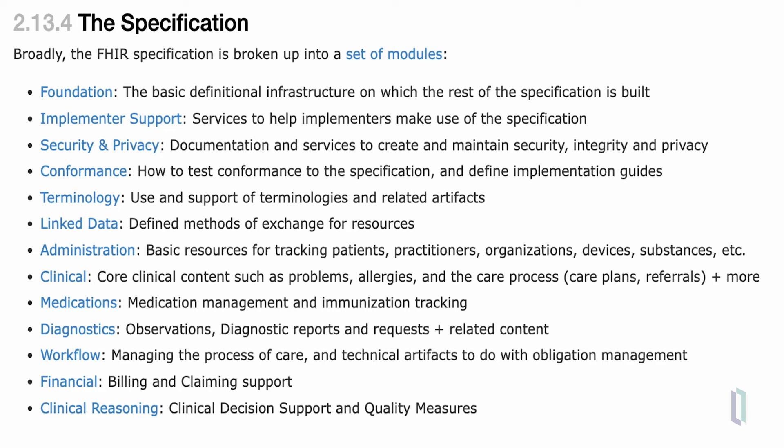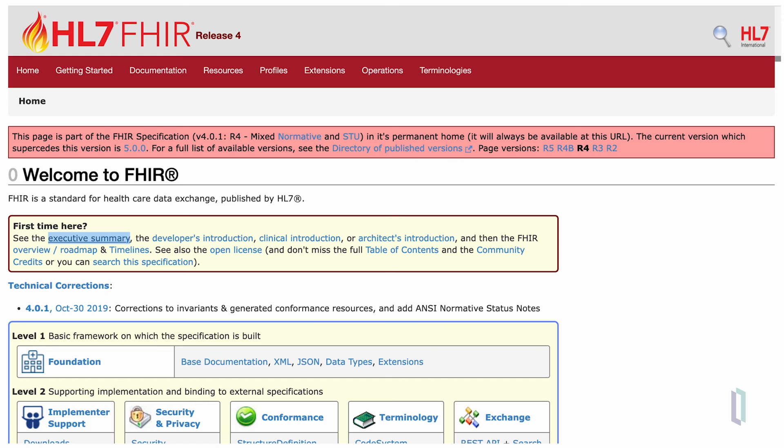There is a linked data module that deals with methods of exchange of FHIR resources. There is an administration module, which includes the basic resources for tracking patients, practitioners, and organizations, as well as devices and substances. There is a clinical module, which contains the core clinical content such as problems or conditions, allergies, and the care processes. There is a medication module, which enables medication management, considerably different from the concept of medication management in previous standards. There is a diagnostics module that includes observations, diagnostic reports, and requests. And there is a workflow module for managing processes of care, a financial module that includes billing and insurance claims support, and at the highest level, a clinical reasoning module, which is being developed for purposes of clinical decision support and quality measures.